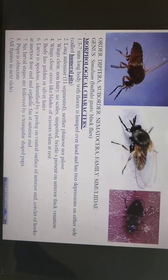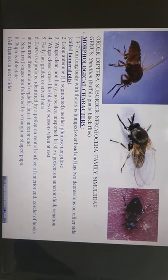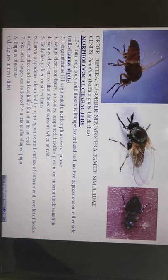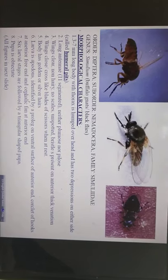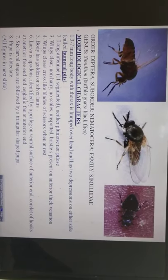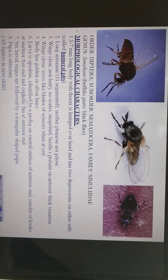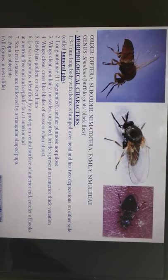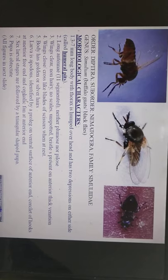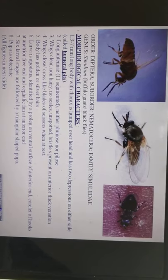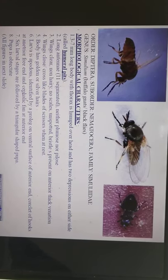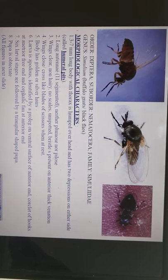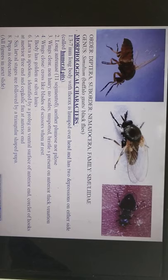Nematoceran flies have piercing and sucking type of mouthparts, whereas Brachycera flies have cutting and sponging type of mouthparts, as we discussed in the previous video. Brachycera includes tabanid flies. Last comes the Cyclorhapha flies, like the muscid flies, Musca.